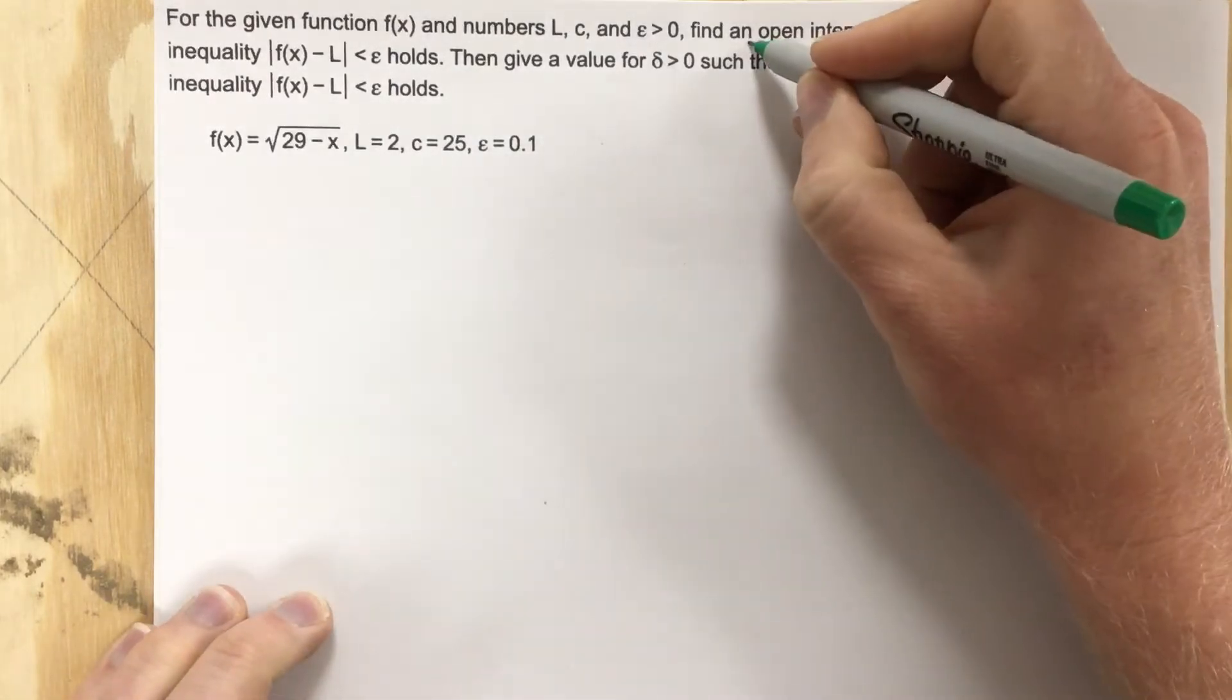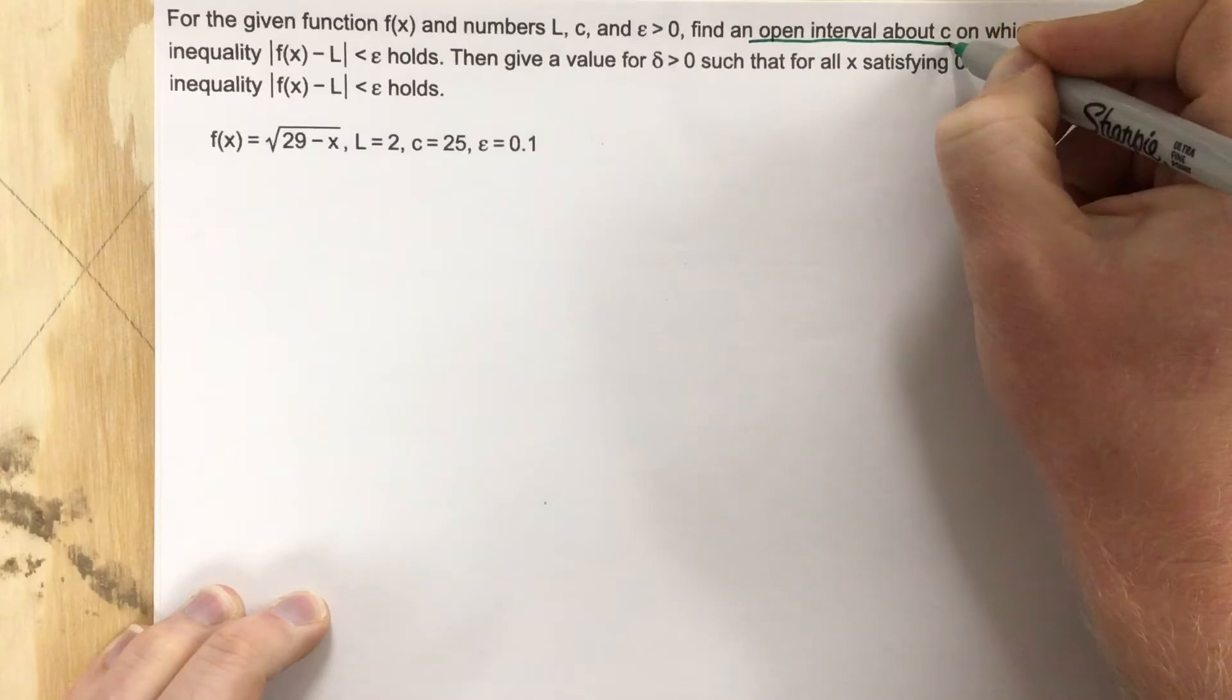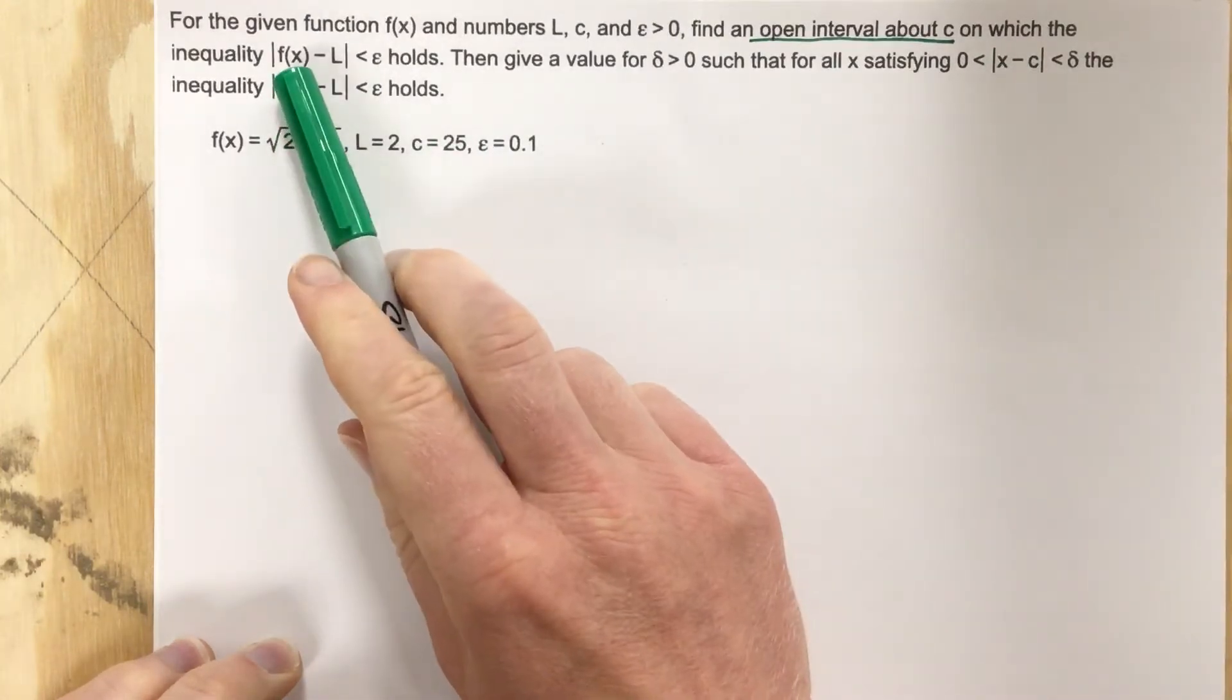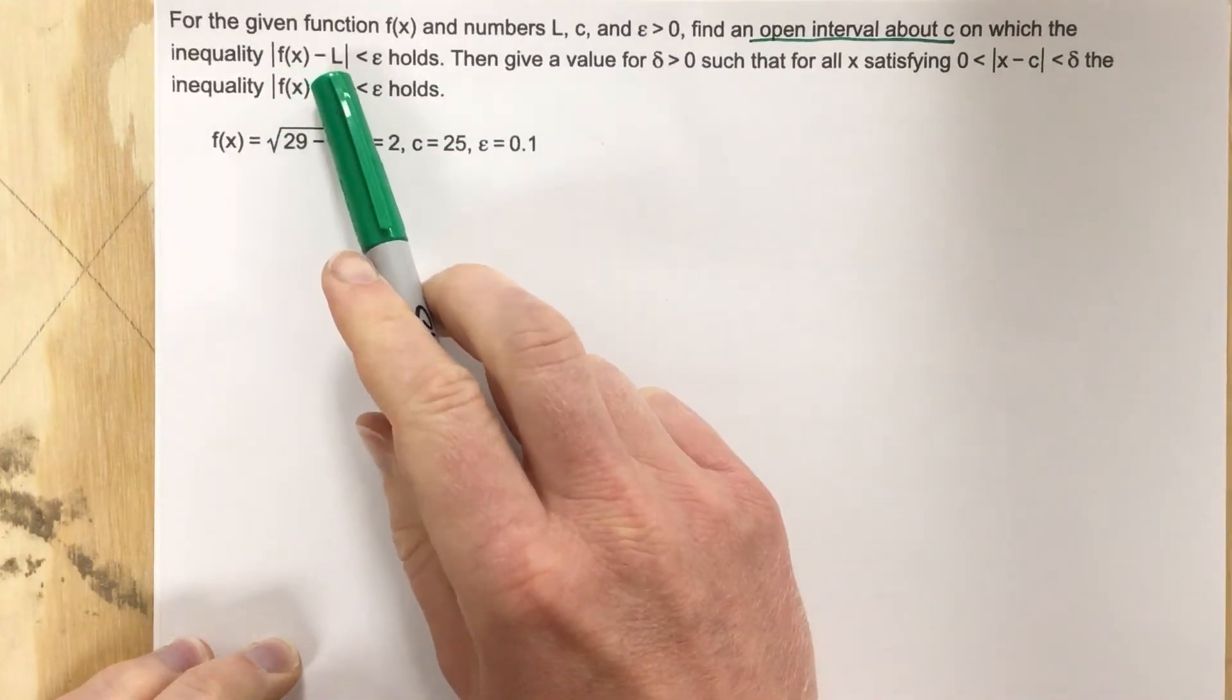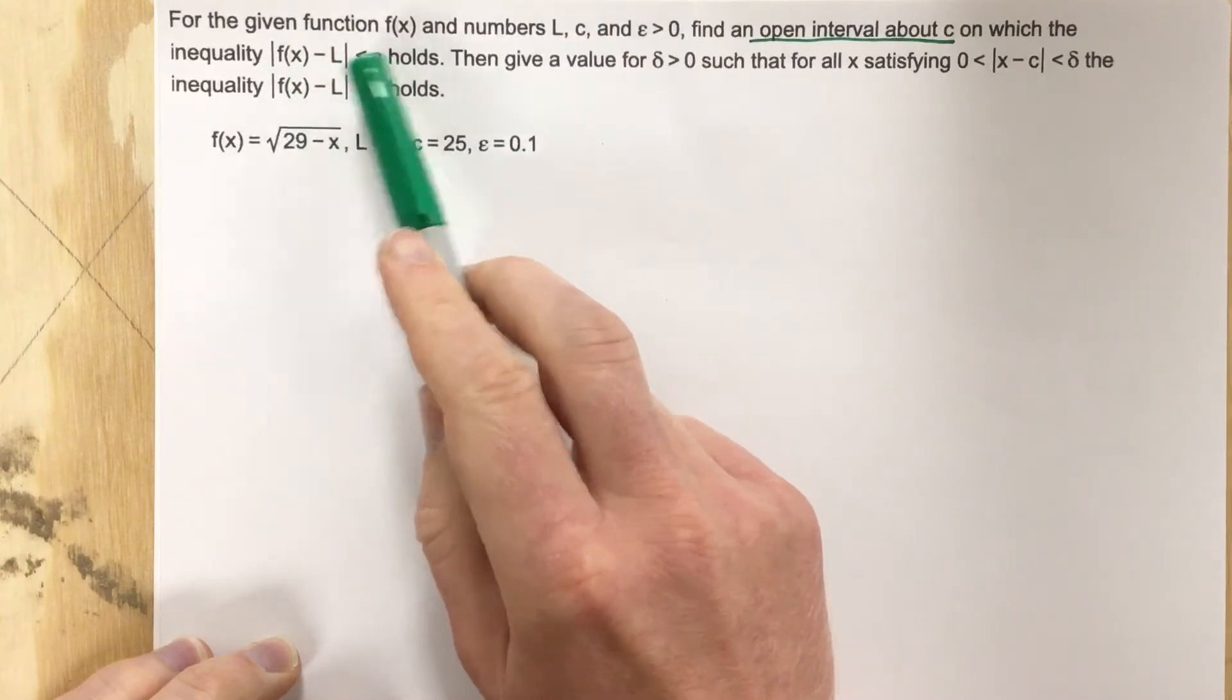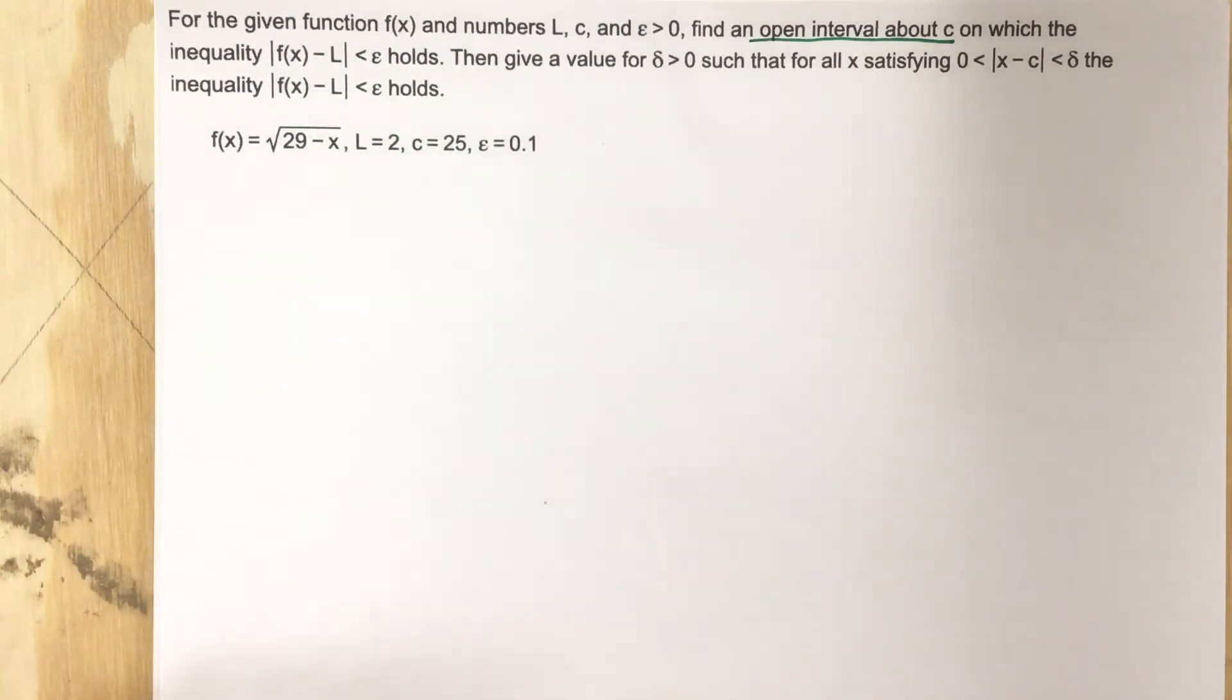They want us to find an open interval about c. That means you're looking for x values that surround c, on which the inequality |f(x) - L| < epsilon holds. So we want our y values to be within this tolerance, epsilon.